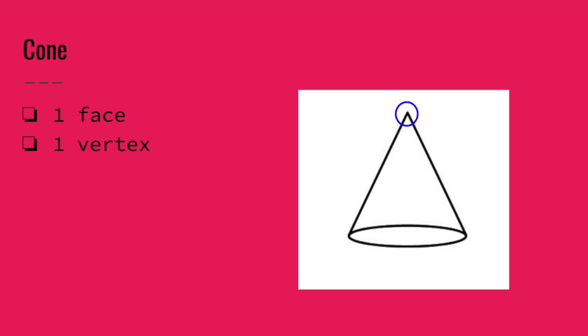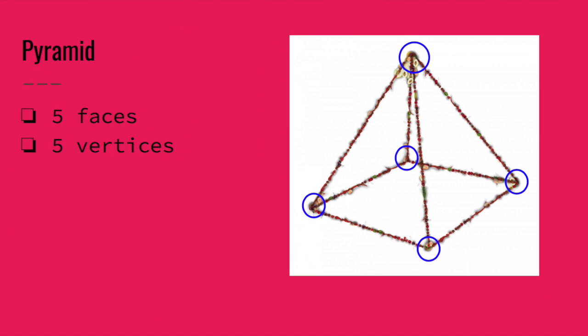The next 3D shape is called a pyramid. A pyramid you might think looks familiar like the pyramids that we see in Egypt or on TV. A pyramid has five faces and five vertices. You can see the vertices at the bottom. It looks like the corners of a square. And then we have the one vertex up at the top where all of the lines come together and meet. That is our pyramid.